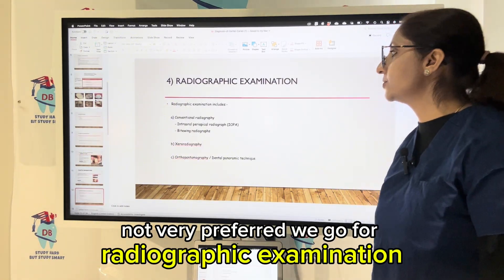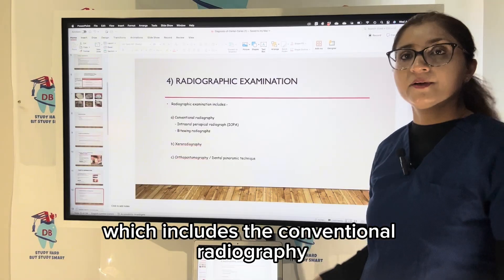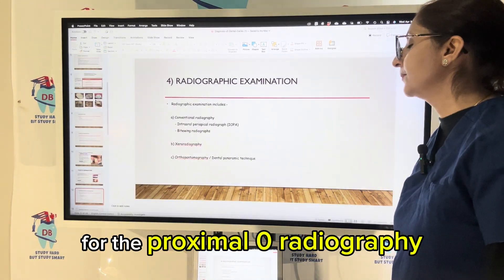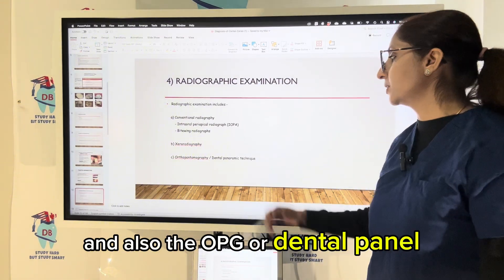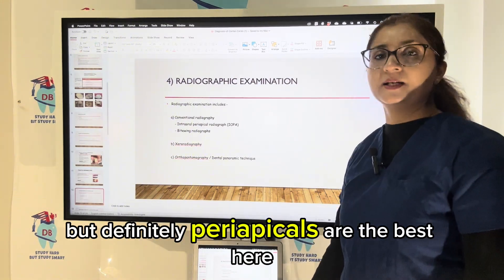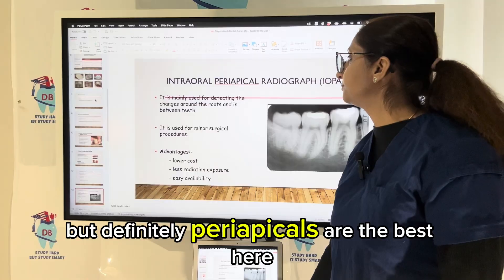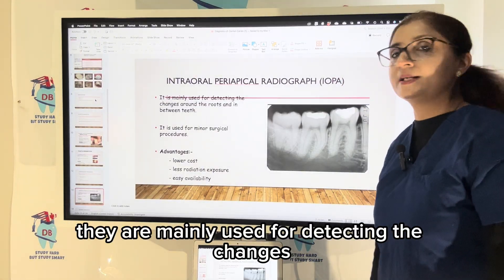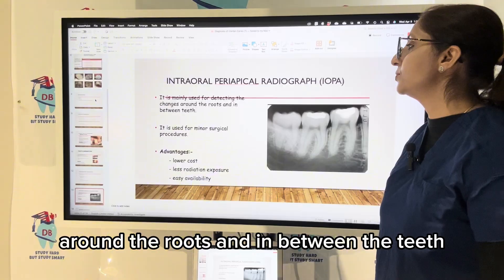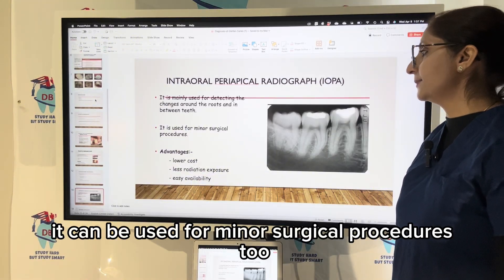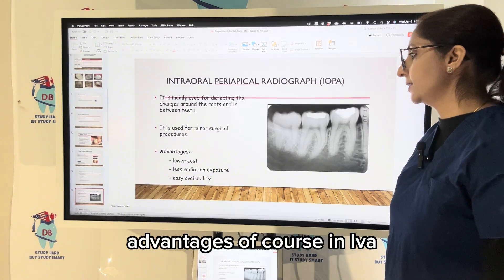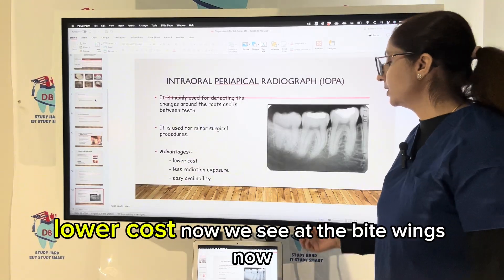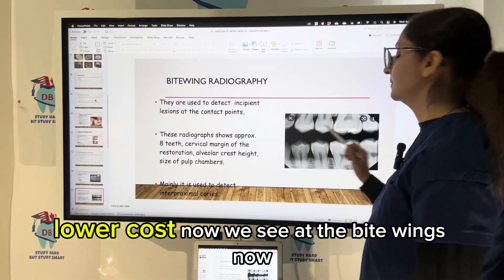For radiographic examination, we use conventional radiography such as periapical, bite wing for proximal areas, xeroradiography, and OPG or dental panoramic panel — but periapicals are the best. Intraoral periapical radiographs (IOPA) are mainly used for detecting changes around the roots and between the teeth. They can also be used for minor surgical procedures. Advantages of IOPA include lesser radiation exposure and lower cost.